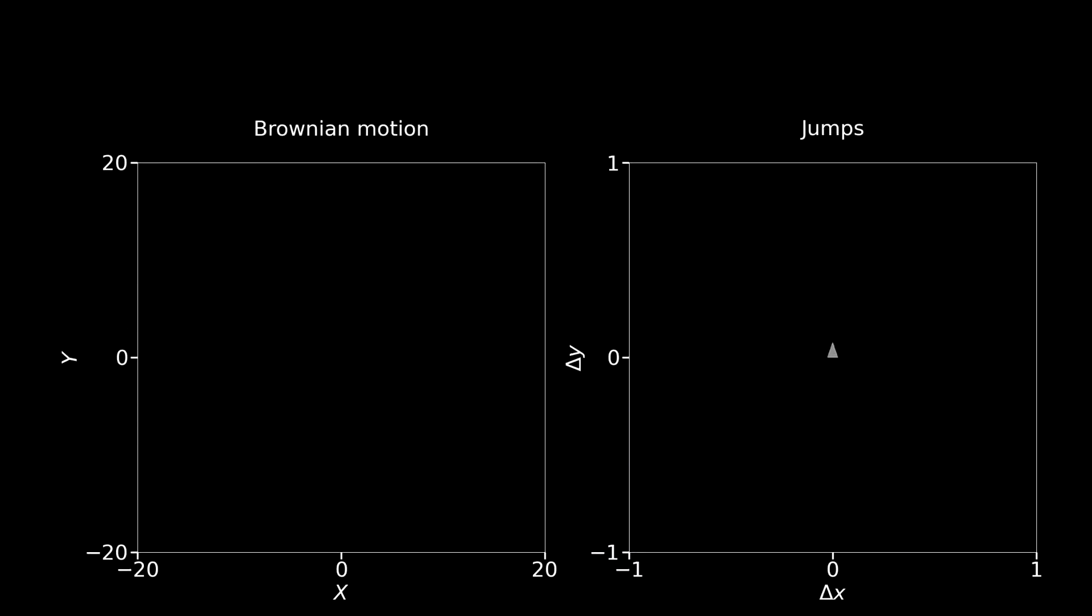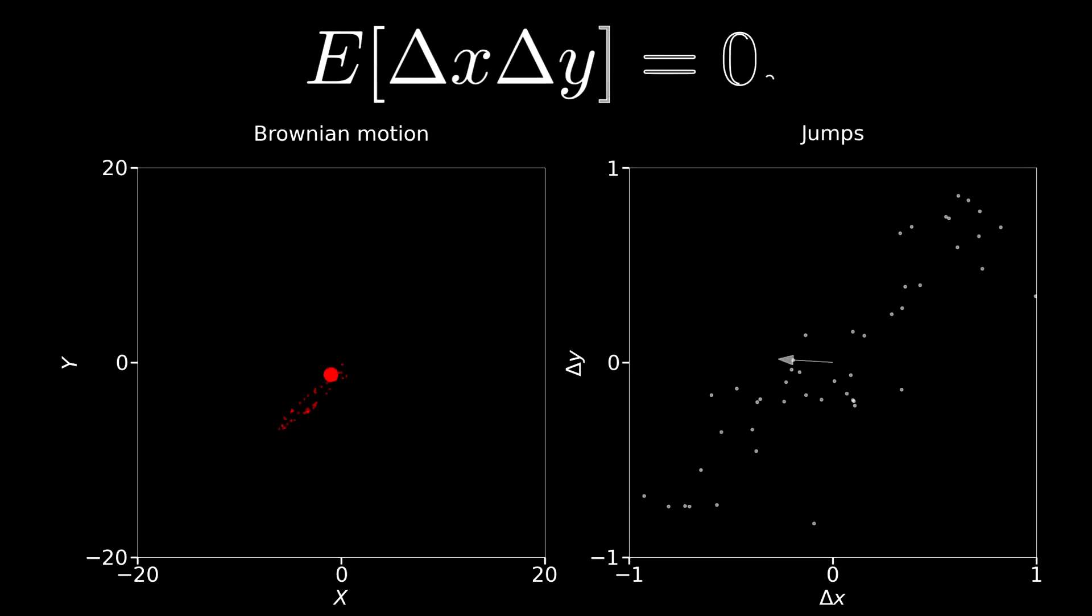If we make the correlation non-zero, we are basically saying that every time you jump towards positive x, you tend to also jump towards positive y. That is sort of the meaning behind the correlation. And vice versa.